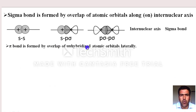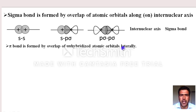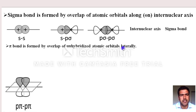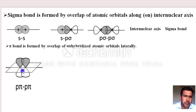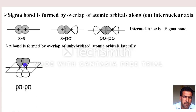A pi bond is formed by overlap of unhybridized atomic orbitals laterally — that is, above and below the internuclear axis, not along it. For example, one atom's p orbital overlaps with another atom's p orbital sideways. The internuclear axis itself is not involved in the overlapping region.